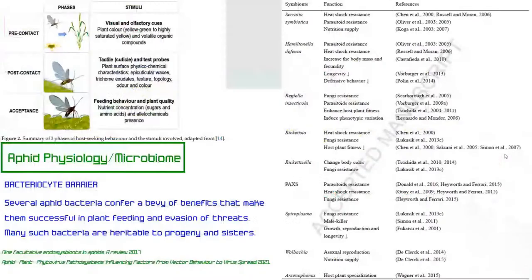How do aphids actually find and feed on plants? They use olfaction and sight to detect a host. Color is important — most plants are green, but plants with yellow hues or ultraviolet reflectance are especially attractive to aphids. Structures, paints, or even vehicles of certain colors near your grow could potentially attract aphids. Yellow sticky cards are yellow precisely for this reason.